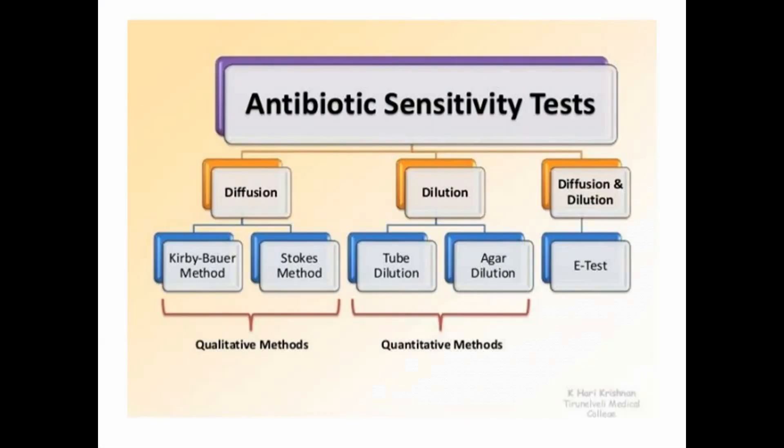These are some of the antibiotic susceptibility testing methods — three main categories: diffusion, dilution, and both. Diffusion methods include the Kirby-Bauer method and E-test. Dilution methods include tube dilution and agar dilution.